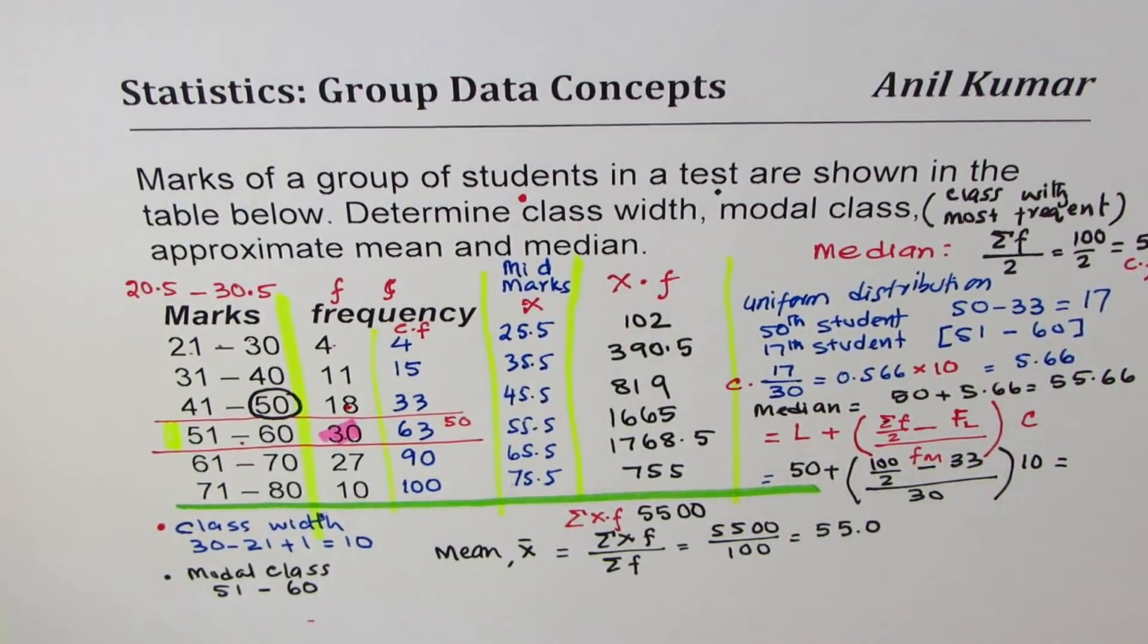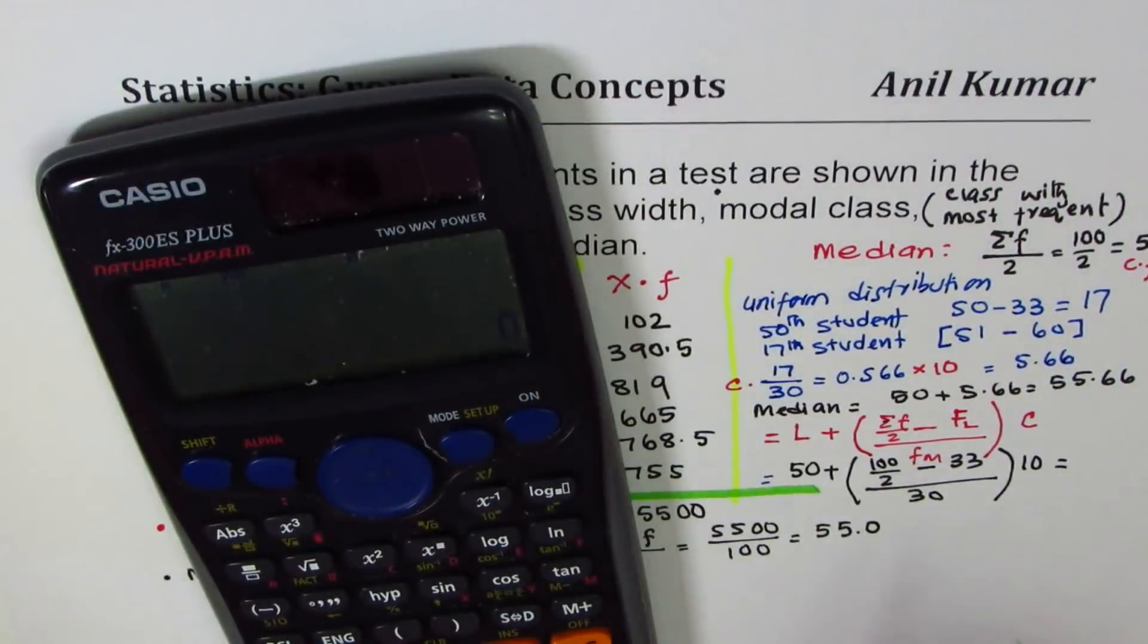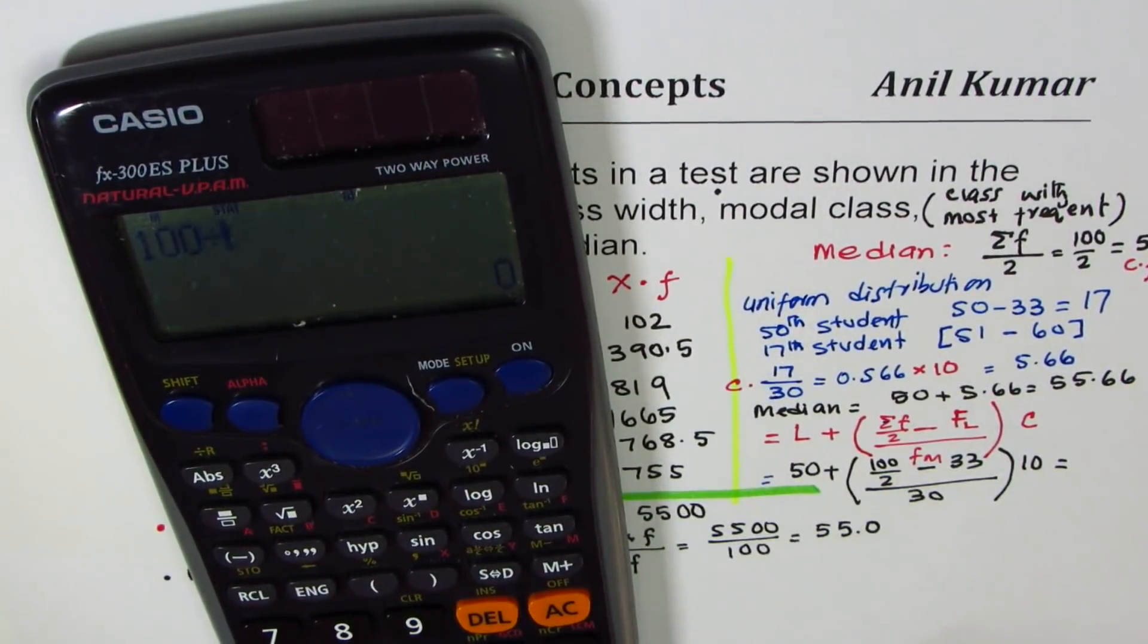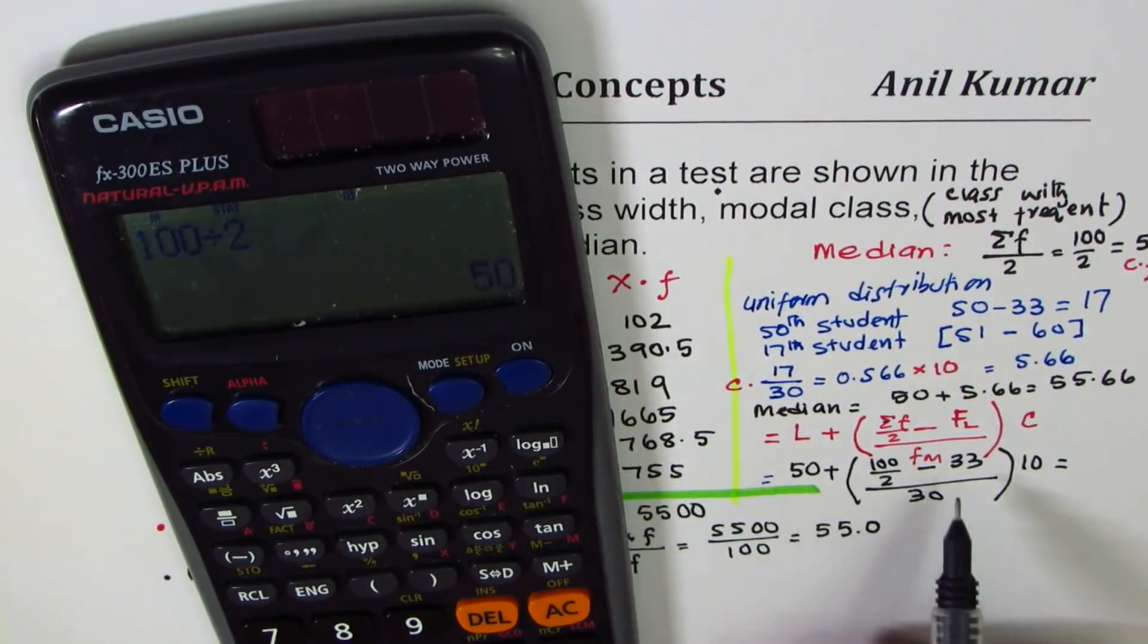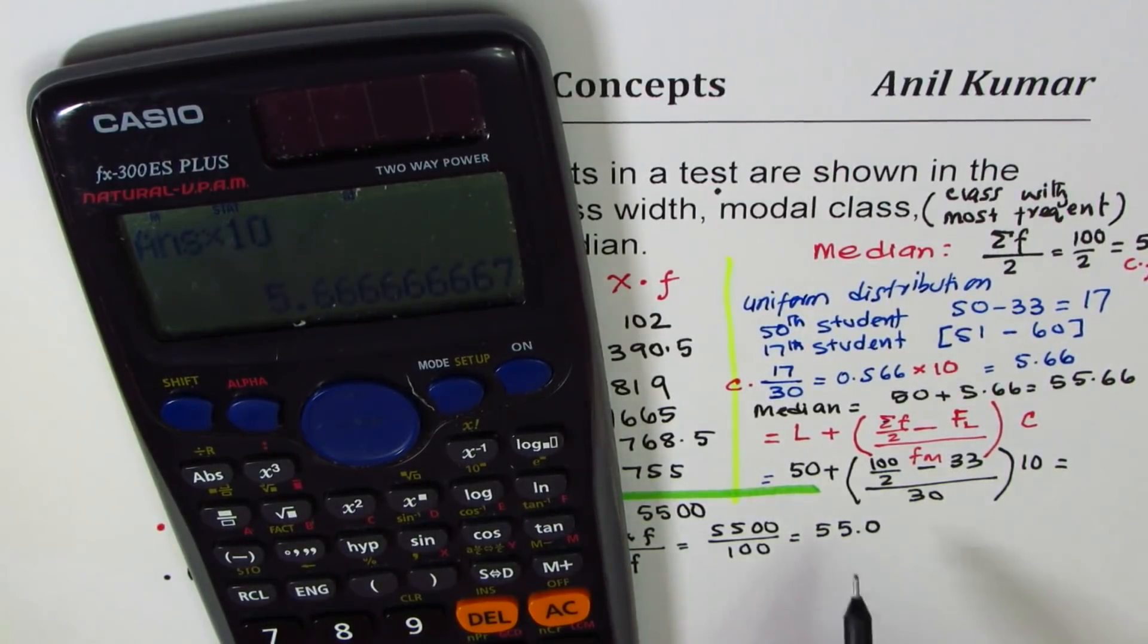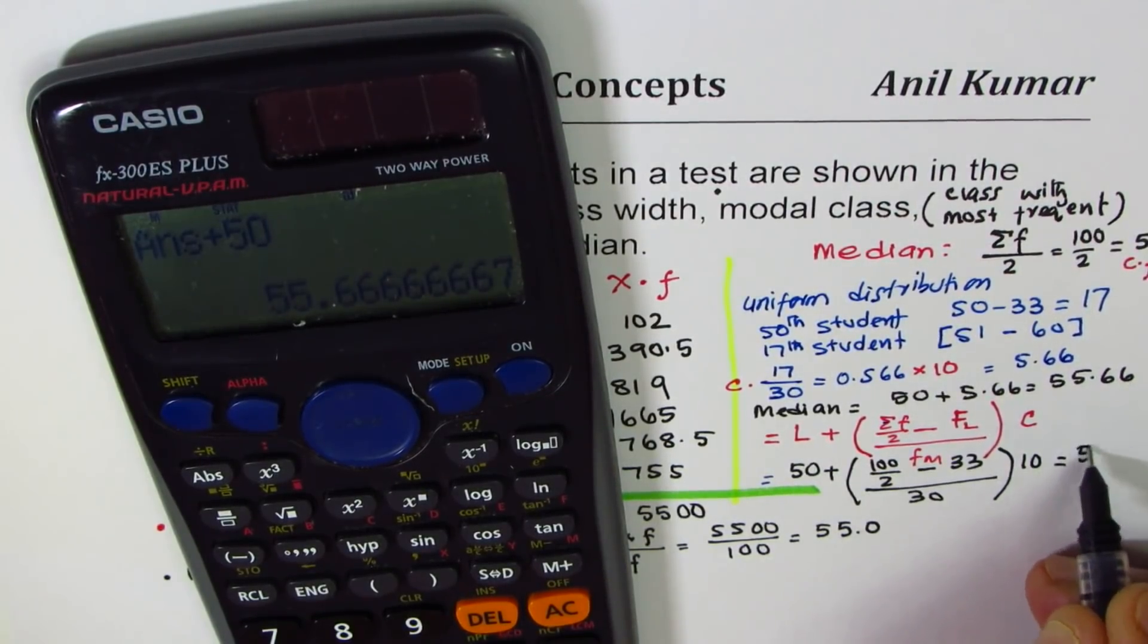Let's calculate this value. So the value is 100 divided by 2 which is 50, take away 33 minus 33, divide this by 30, multiply by 10, then add 50 to it. We get 55.66.